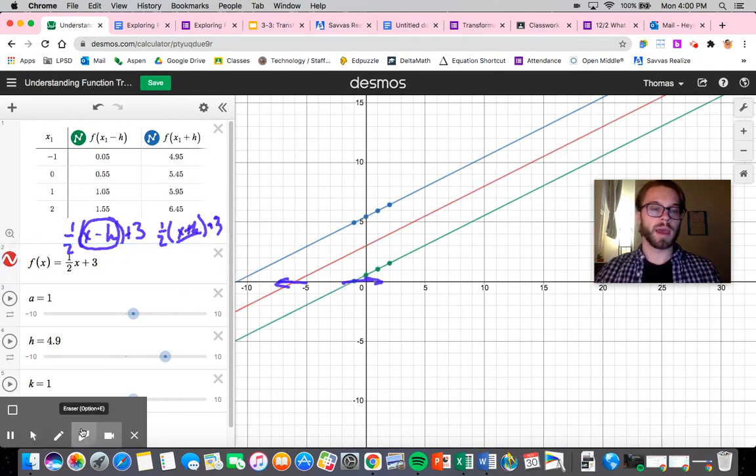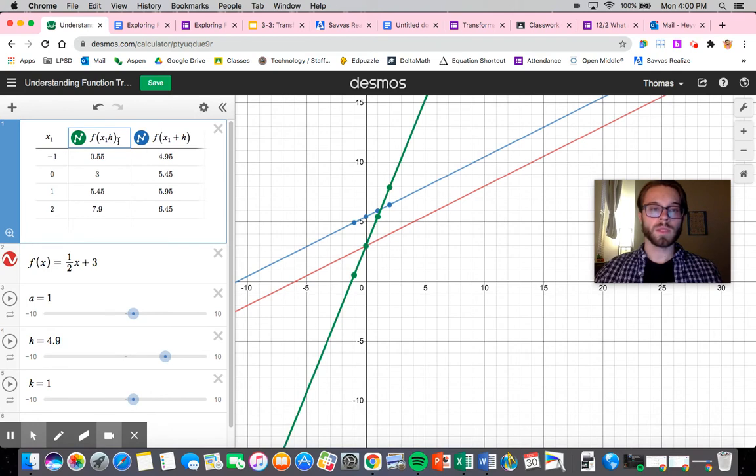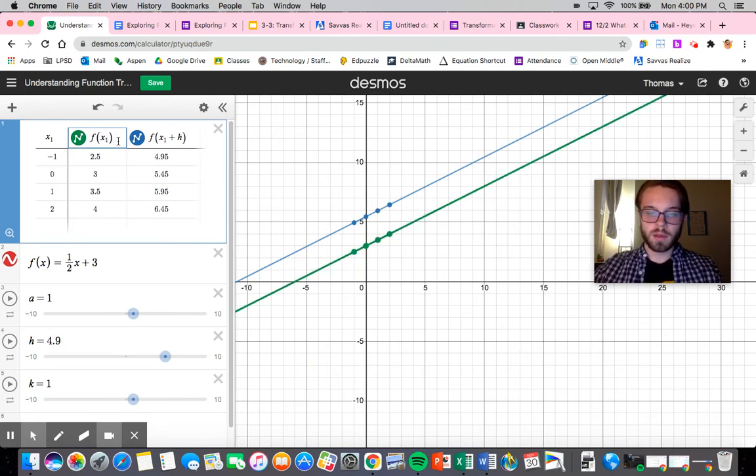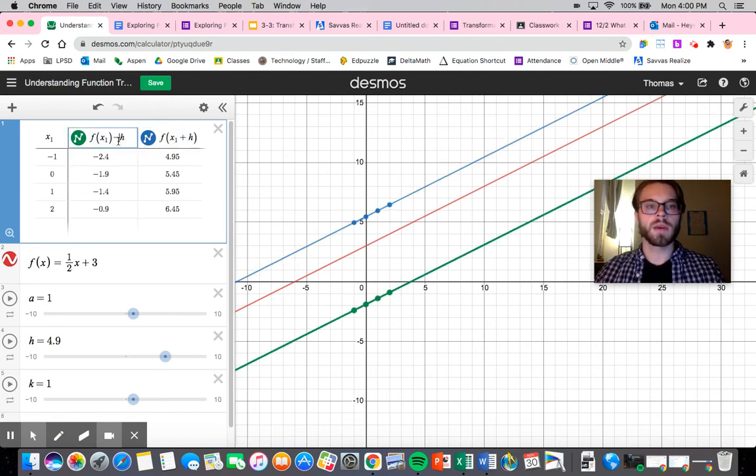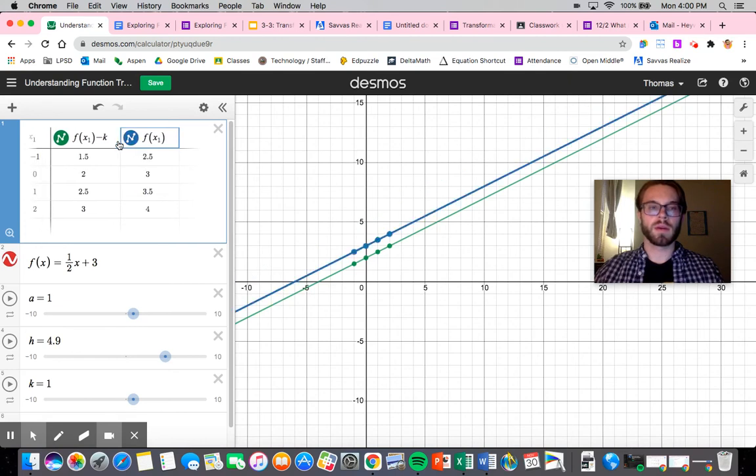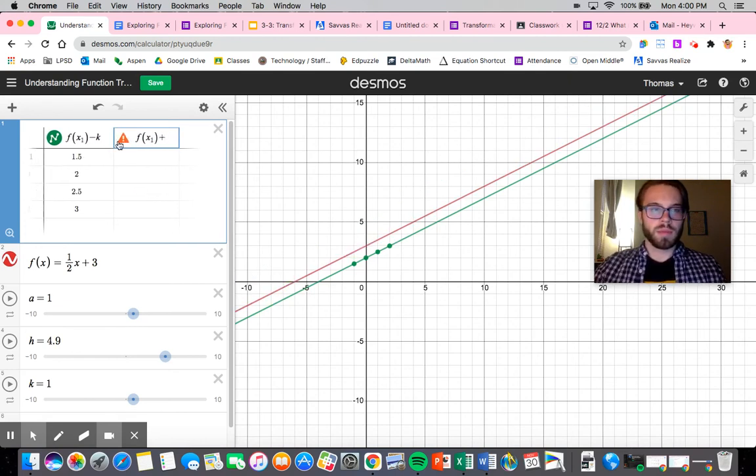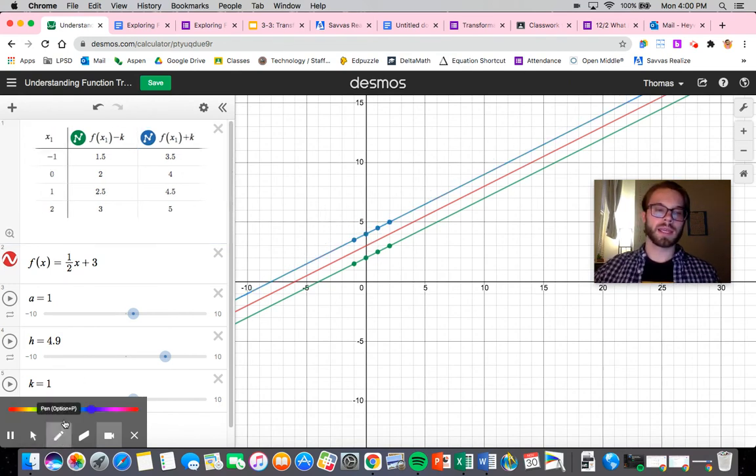Let's now look at what happens if I'm adding and subtracting outside. Usually when you have outside, you're dealing with k. So as you can tell, and this one I think is a little bit more easy to see, the k, it goes up. You're adding it, you're going up. You're subtracting it, you're going down. And why is that?